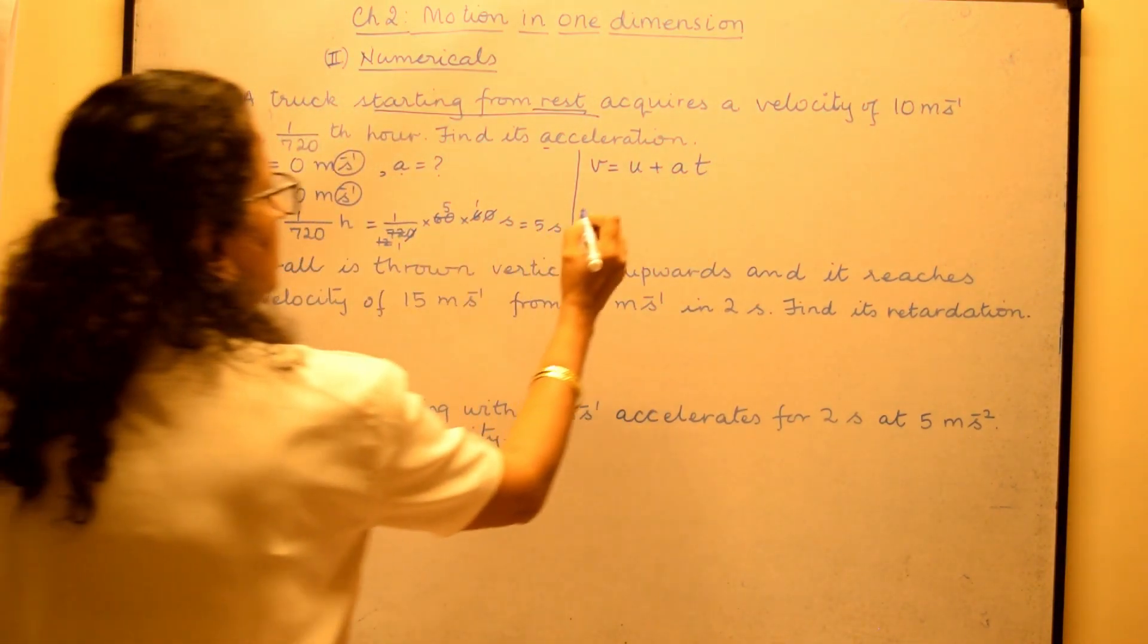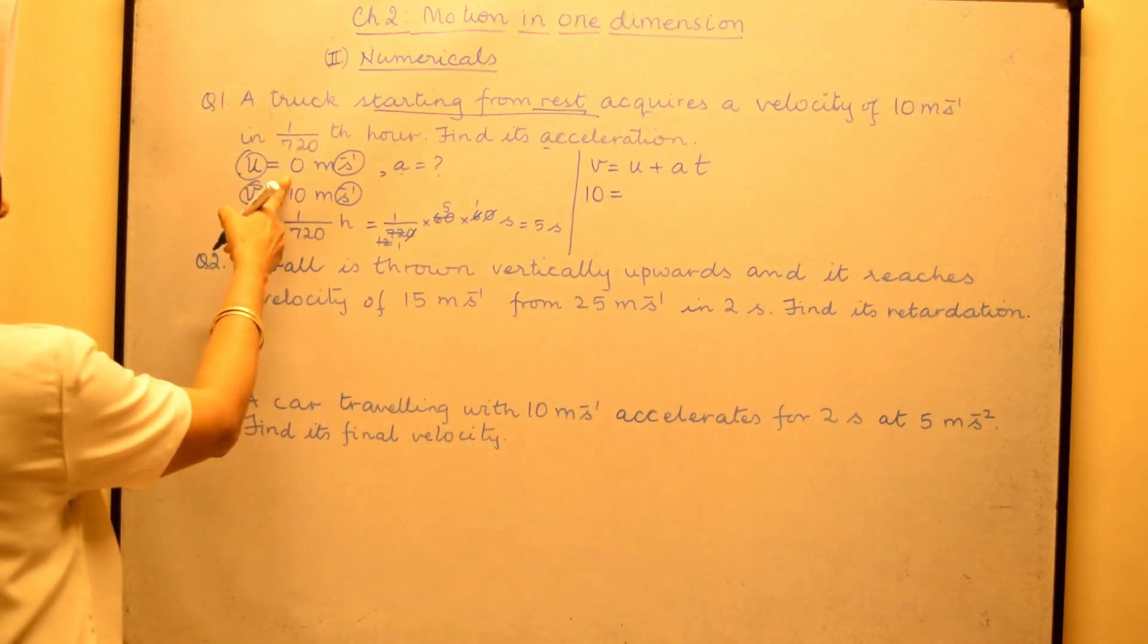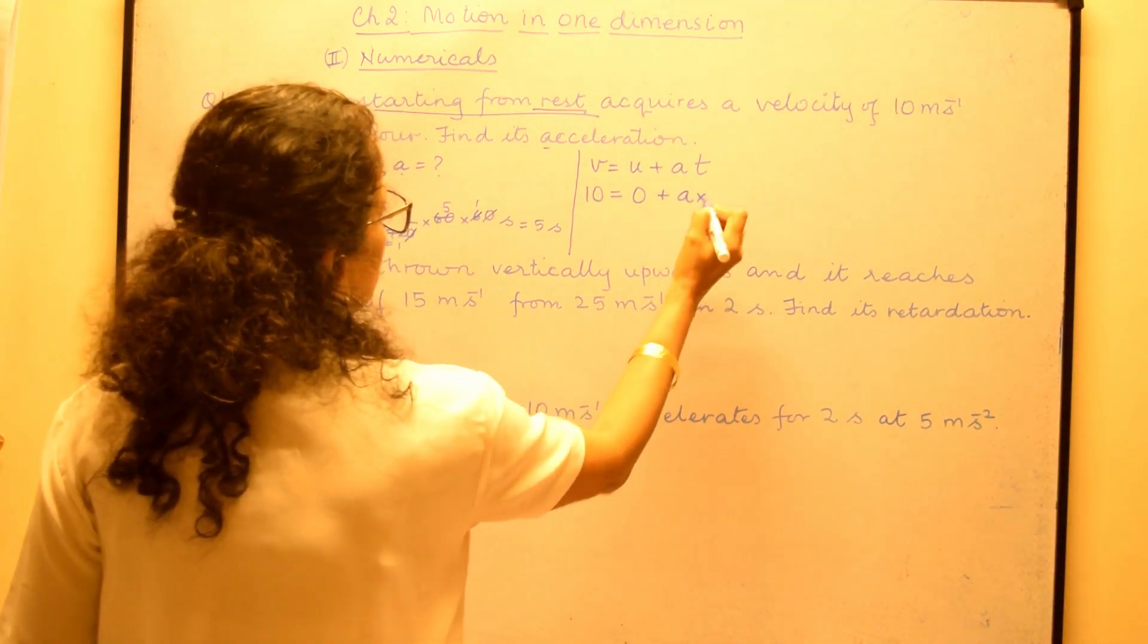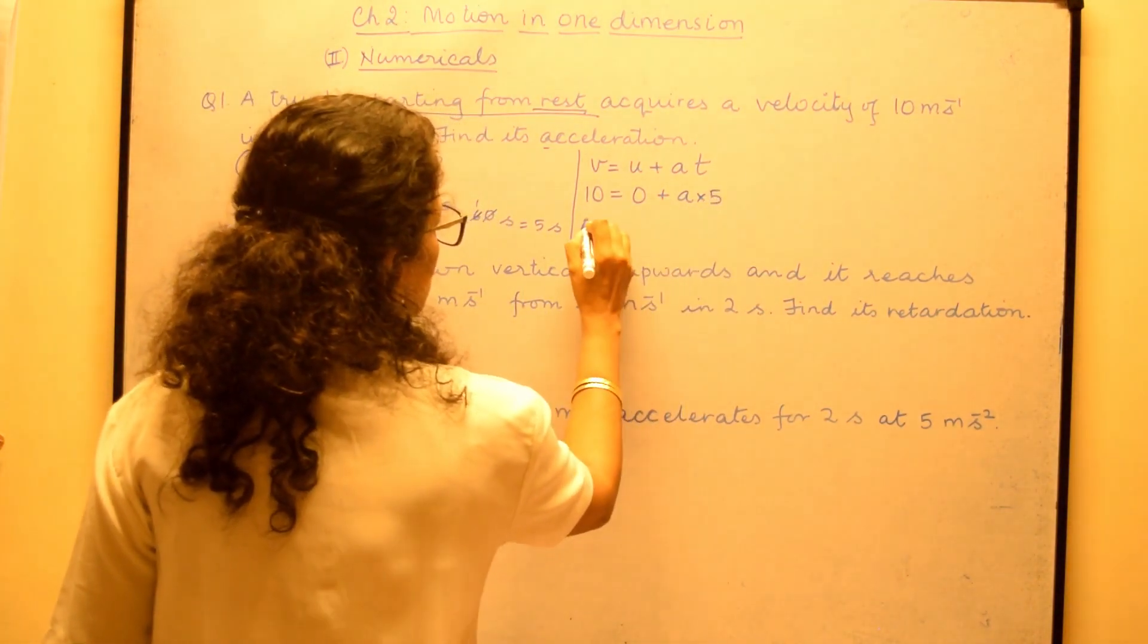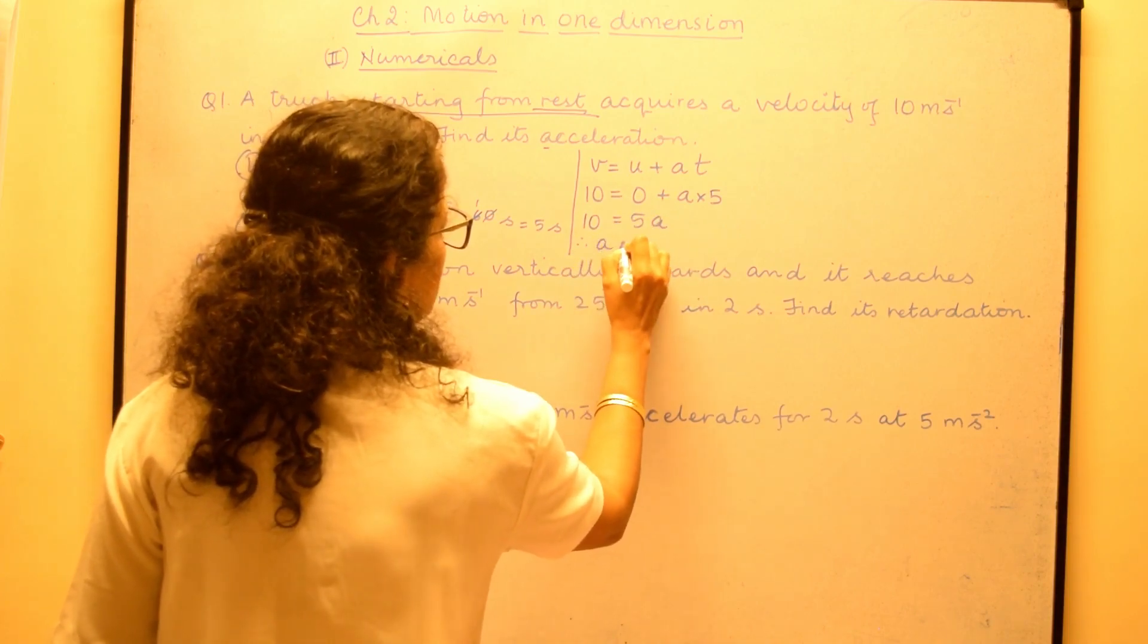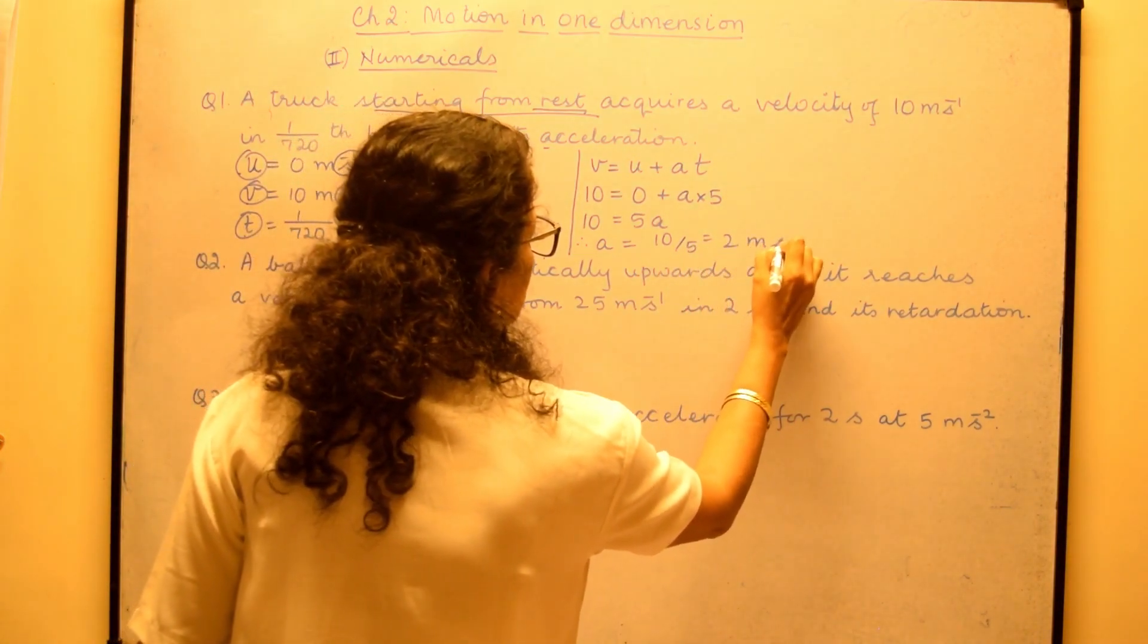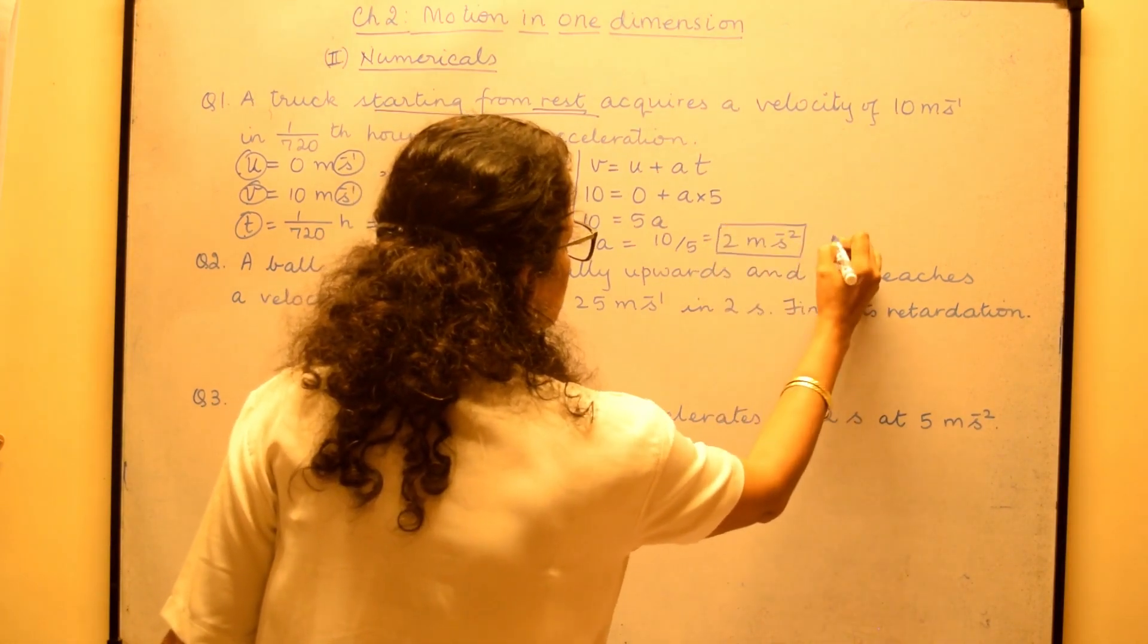v is 10 meter per second. So I will write 10. u is 0. So we write here 0 plus a which we have to find and time is 5 seconds and so you will have 10 is equal to 5a and therefore a is equal to 10 upon 5 which is 2 meter per second square. So that is our answer 1.